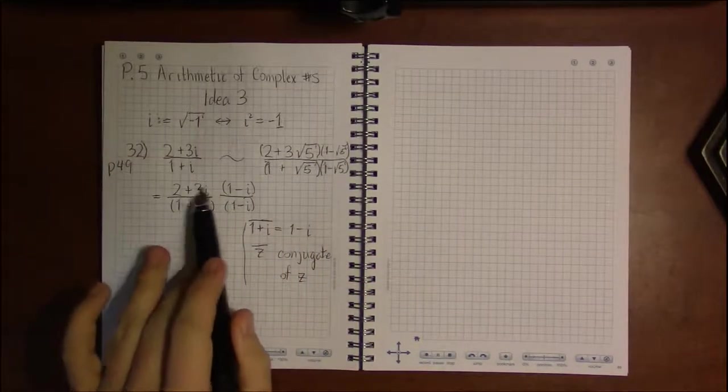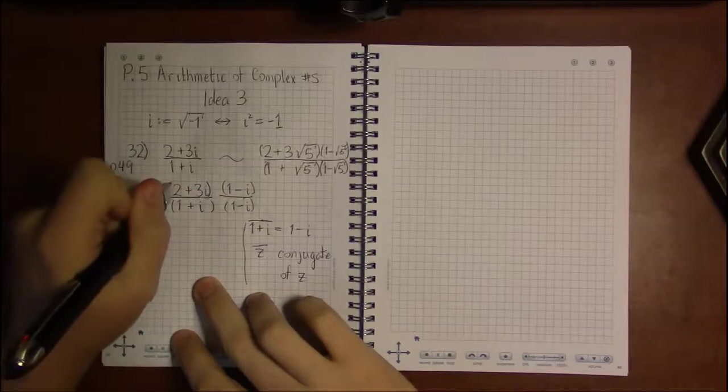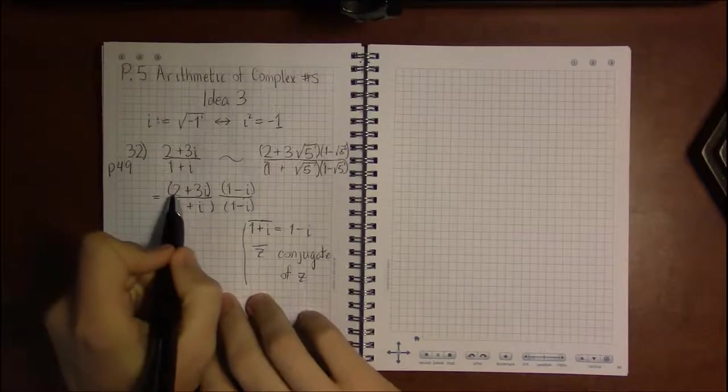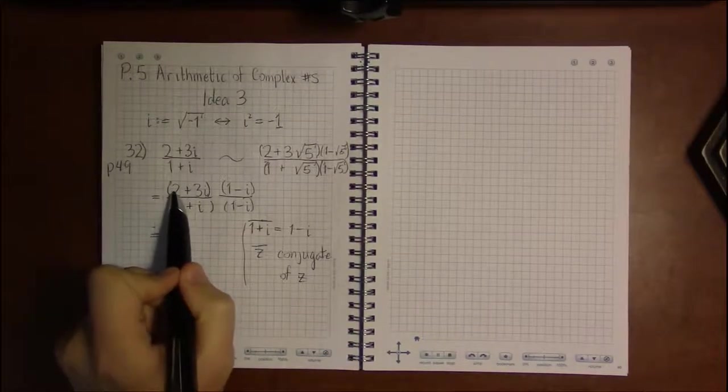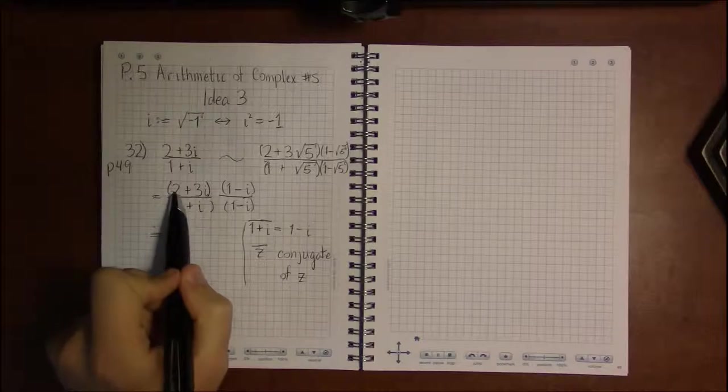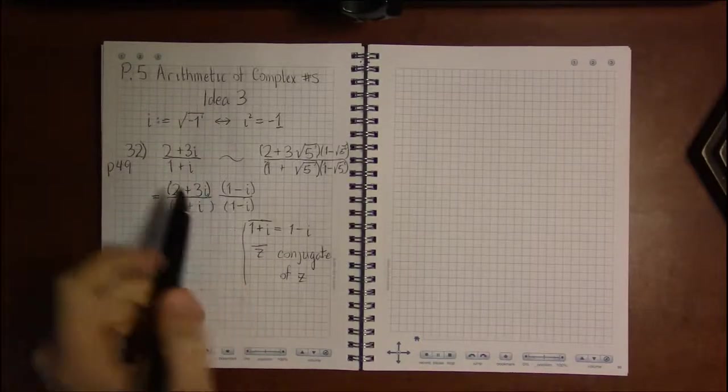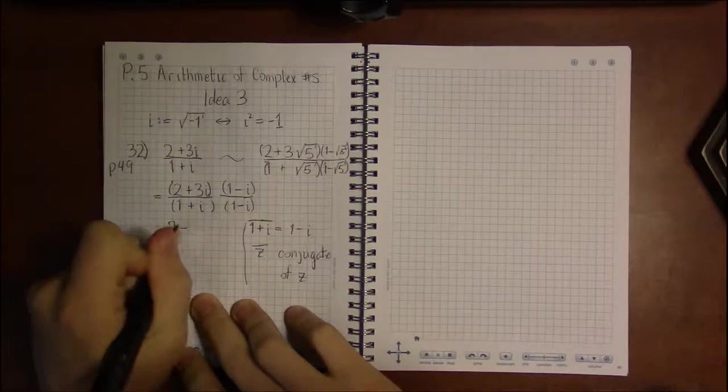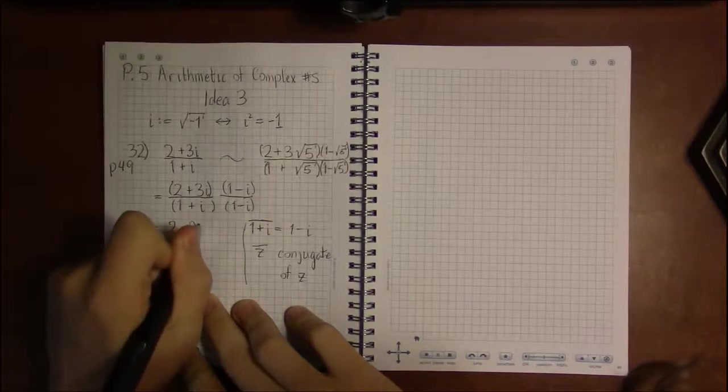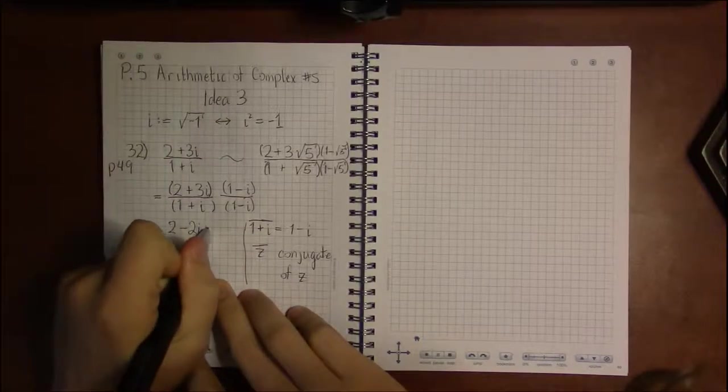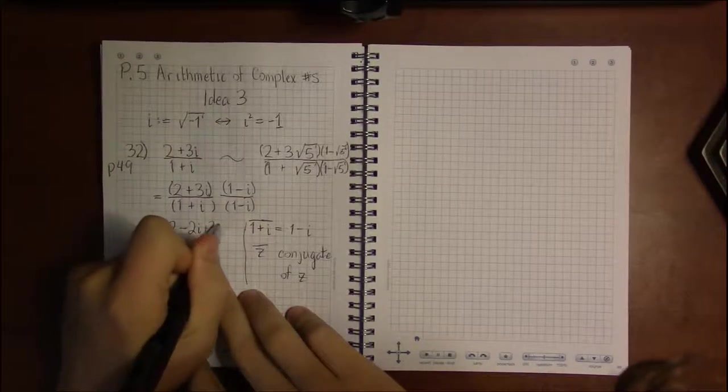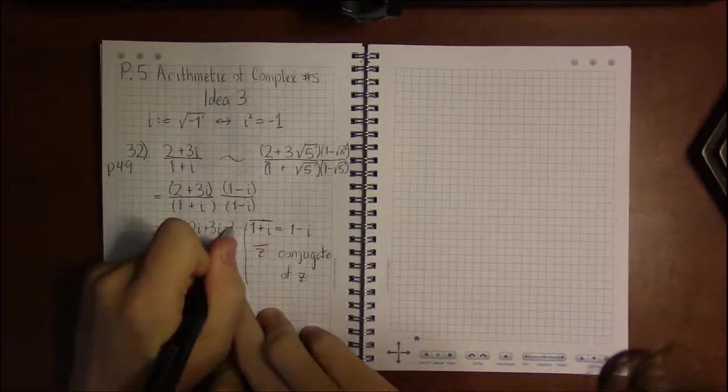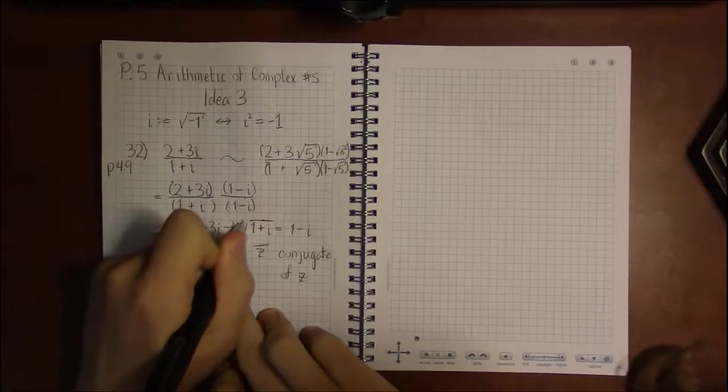So we perform the multiplication here. That's going to be our next step. So I'm going to do it the way I like it, which is to distribute or foil this out. So 2 times 1 is 2. 2 times minus i is minus 2i. 3i times 1 is plus 3i. 3i times minus i is minus 3i squared.